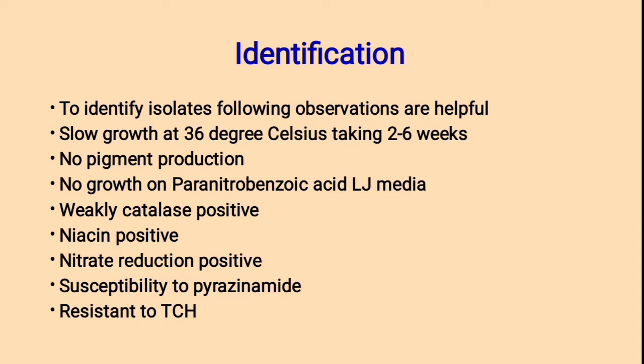Identification — to identify Mycobacterium tuberculosis, the following observations are helpful: slow growth at 36°C taking 2 to 6 weeks; no pigment production; no growth on para-nitrobenzoic acid medium; weekly catalase positive; niacin positive; nitrate reduction positive; susceptibility to pyrazinamide; and resistance to TCH.